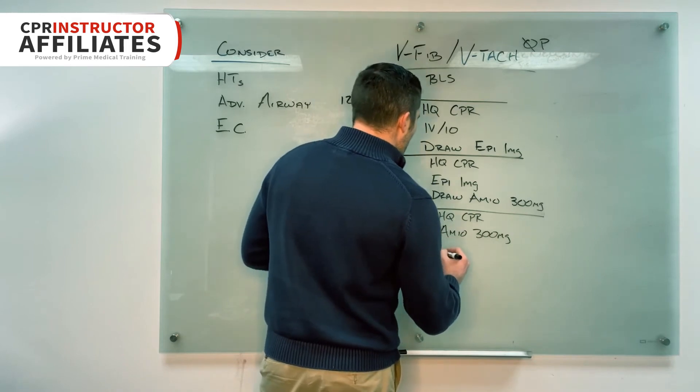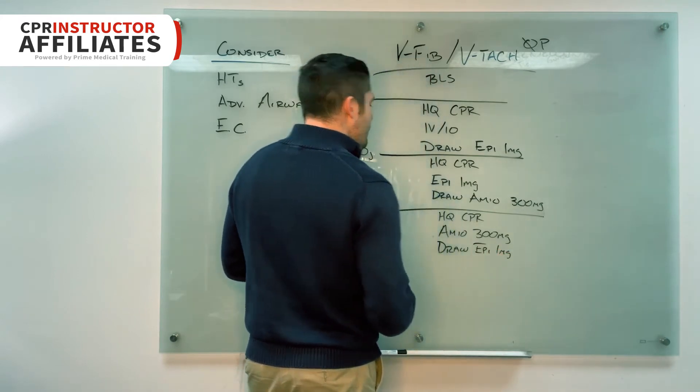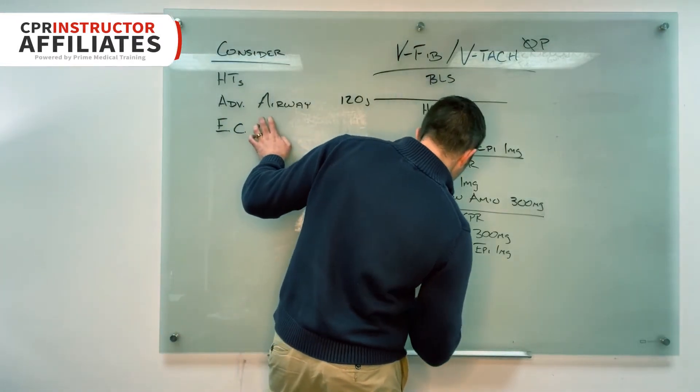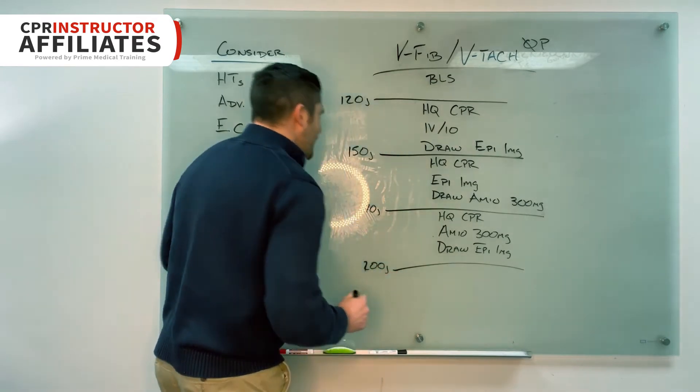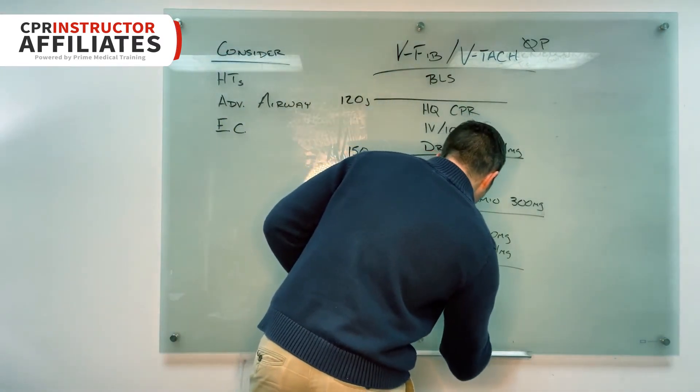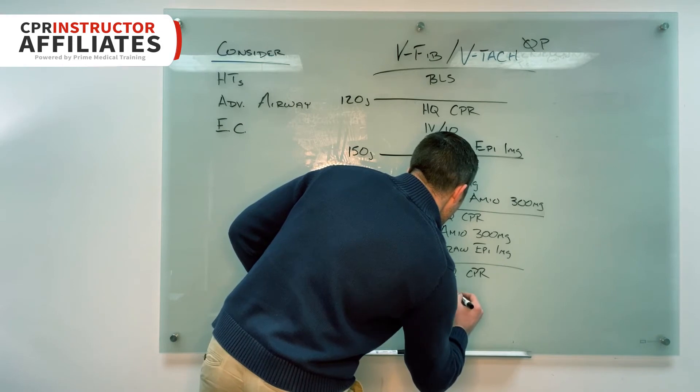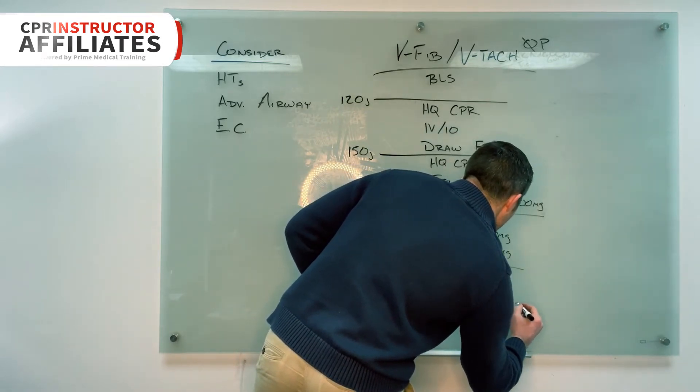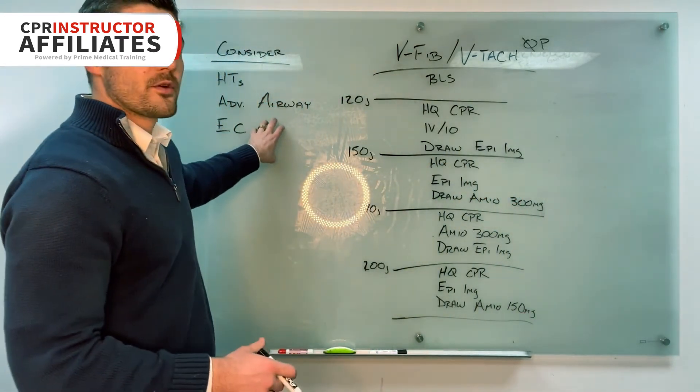And then we're going to draw up the next drug, which is going to be epi one milligram. And two minutes, so our two minutes are not up yet. So what are we going to do? I want them to tell me that they're going to consider the things up here. And then two minutes is up. We're going to do, we can just go to 200, and I'll tell them, hey, at 200 joules, that's where we stay. Once we hit 200, we just keep shocking at 200. High quality CPR. We're going to give the epi, and then we're going to draw the next drug, which is going to be amiodarone and this time it's 150 milligrams. Alright, two minutes isn't up. I want them to tell me that they're reconsidering these things.